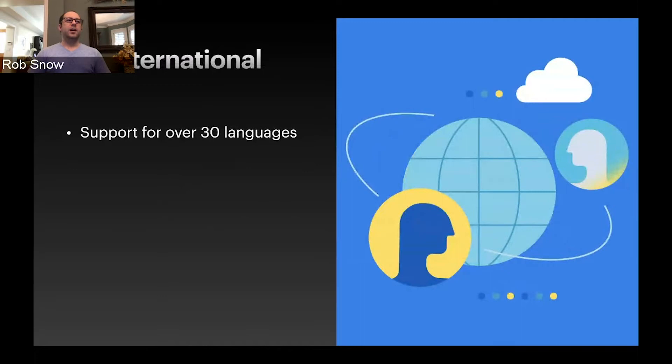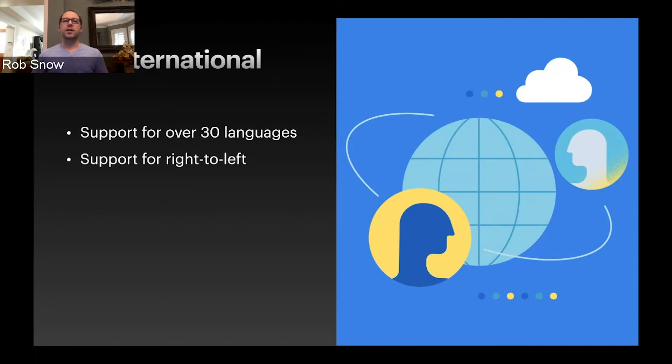React Spectrum is internationalized into over 30 languages. Adobe products are used all over the world, so it's important that we support them. We also include right-to-left support, which mirrors UIs for languages such as Hebrew and Arabic, which are read from right to left. On top of that, we also support internationalized date and number formatting for different locales.